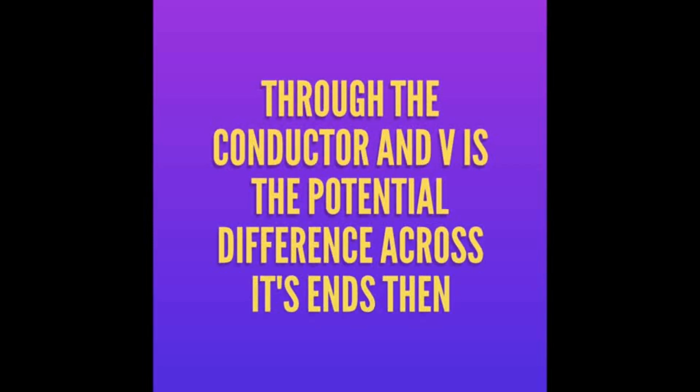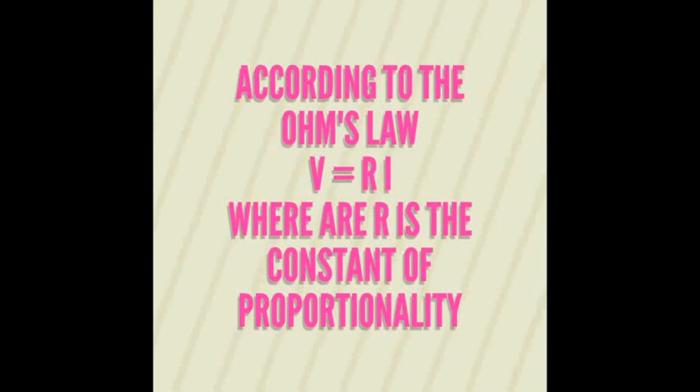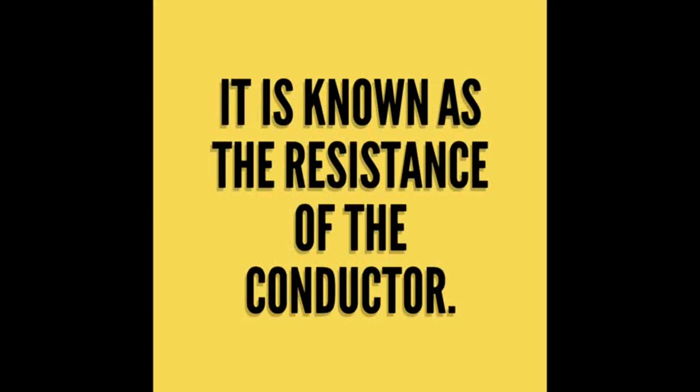If I is the current flowing through the conductor and V is the potential difference across its ends, then according to Ohm's law, V is equal to RI, where R is the constant of proportionality. It is known as resistance of the conductor.